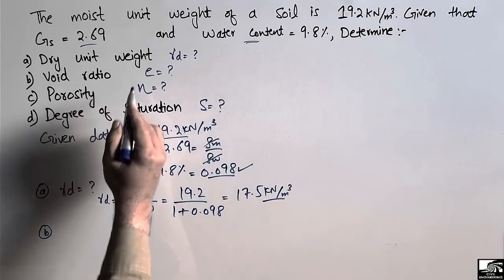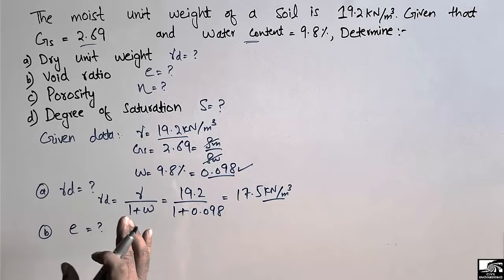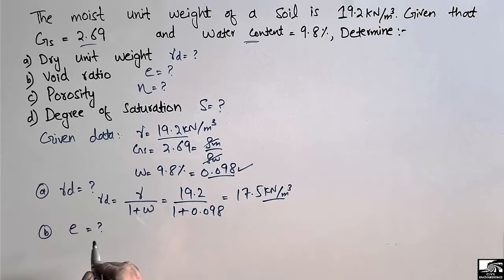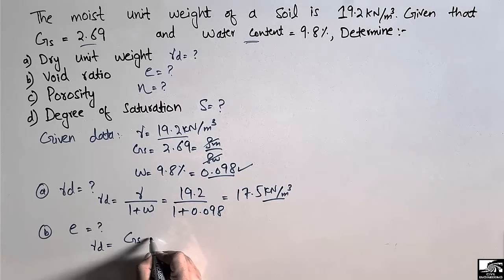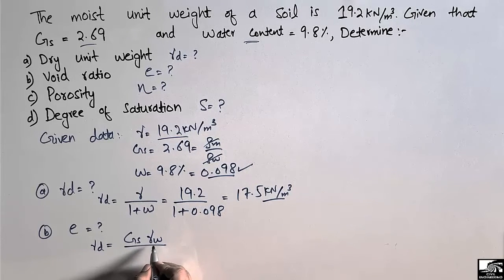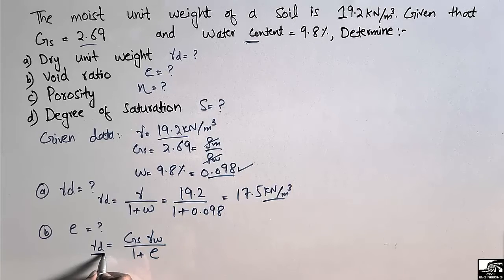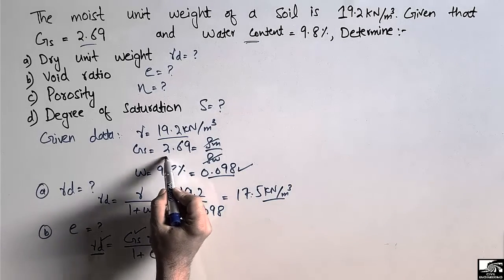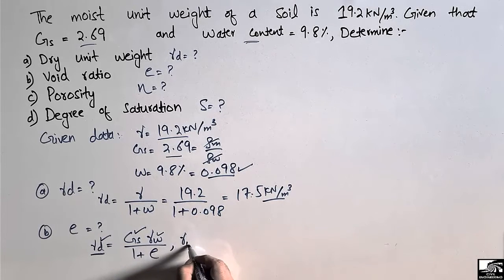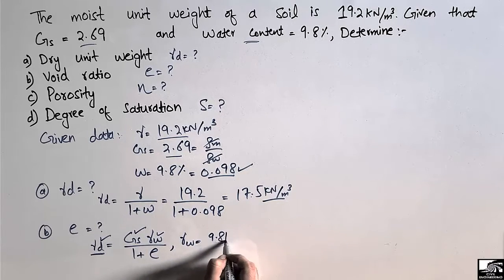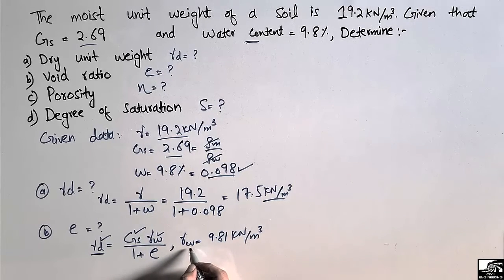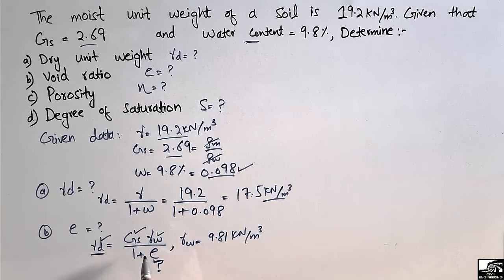Part B: find the void ratio e. Another basic soil mechanics equation is: γd = (Gs × γw) / (1 + e). Here γd = 17.5 kN/m³ is known, Gs = 2.69, and γw = 9.81 kN/m³ (standard unit weight of water). The unknown is e.